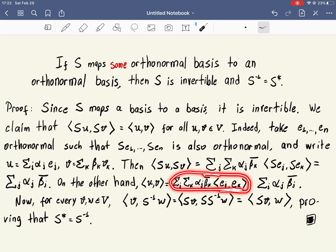And again, this inner product will be zero when J and K are different, and one when they are equal. So this sum disappears and we're left with this. So it coincides, and this proves the claim.